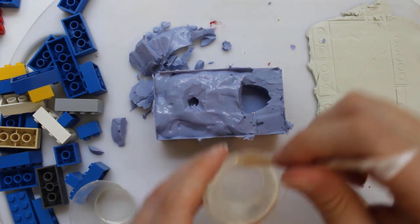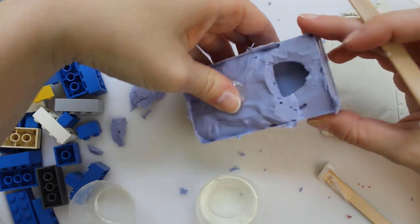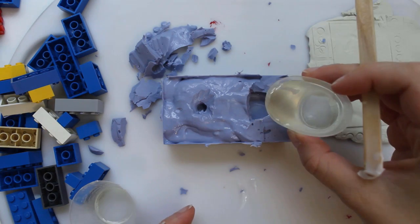I mix and pour some resin into the mold, tilting the mold to try to get it all the way down into the front. Then I fill it the rest of the way and come back to see how it turned out about 20 minutes later.